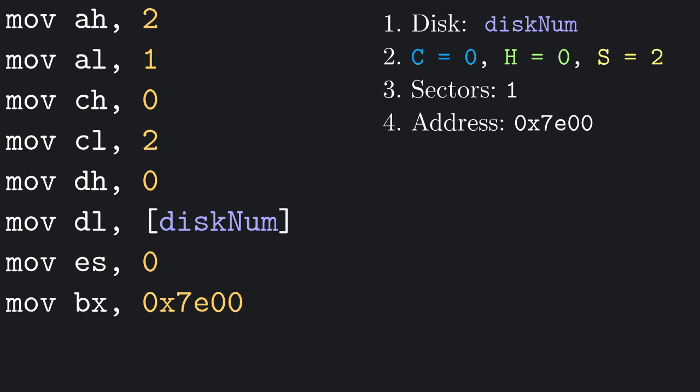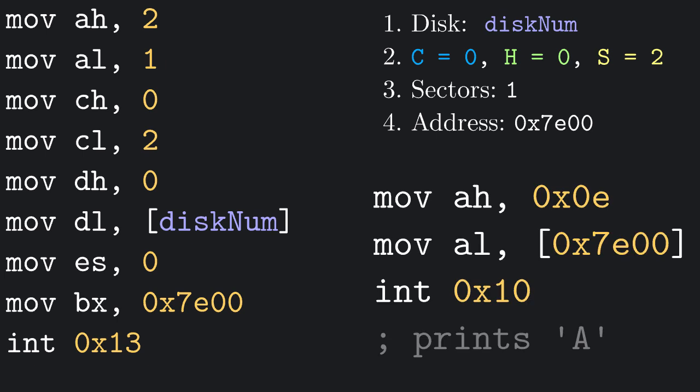Then we simply need to call interrupt 0x13. Let's now try to print a value of memory address 0x7E00. As expected, it prints the letter A. One thing you might want to use this for is to extend the amount of real mode code we can write, which is now limited to 512 bytes.